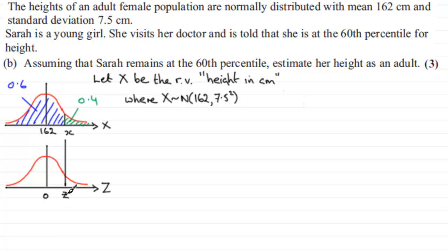Now we need to know what this value of z is. Z is always worked out as being the observed value X minus the mean mu all divided by the standard deviation sigma.